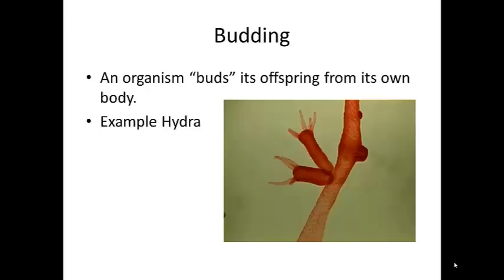Budding is a type of asexual reproduction. In this picture of a hydra, its offspring grows off of its body until it reaches a certain age, then it breaks off and becomes its own organism.